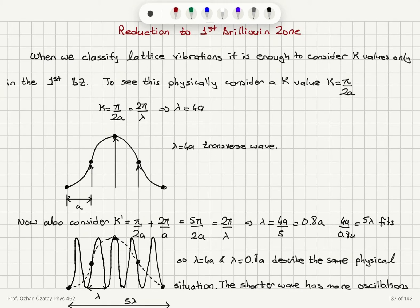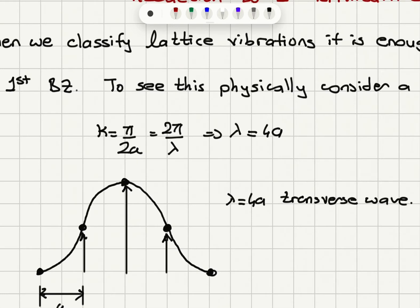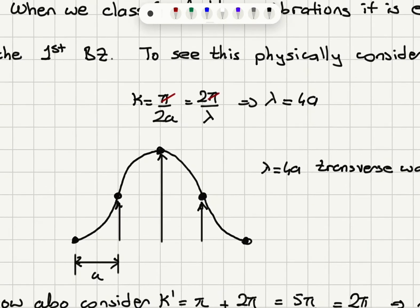To see this physically, we consider a k-value that is π divided by 2a. When k is π/2a, that's equal to 2π over λ. The π's will cancel and we will have λ equal to 4a. For example, we can consider a transverse wave for this illustration.